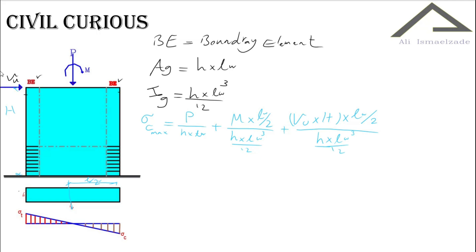And the maximum of tension stress is P divided by gross section minus, look at the direction of tensile is the opposite of compressive and we have to use minus here, M times LW divided by two divided by moment of inertia of gross section minus VU times H times LW divided by two divided by the moment of inertia of gross section. And that's it.